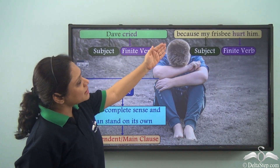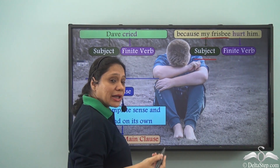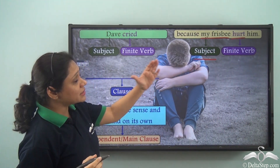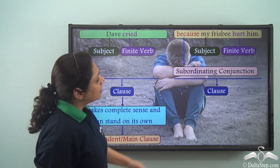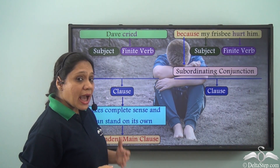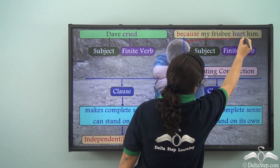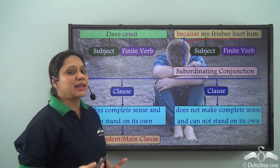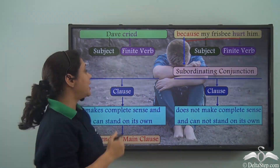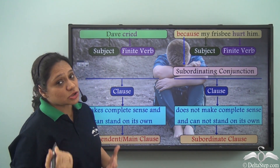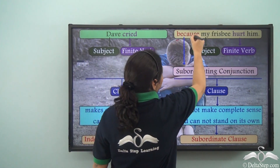'Because my frisbee hurt him' is also a group of words with a subject 'my frisbee' and a finite verb 'hurt', so this is also a clause. However, this clause has a subordinating conjunction 'because', and it does not make complete sense on its own. So 'because my frisbee hurt him' is a subordinate clause, and we know that subordinate clauses have a subordinating conjunction in them.